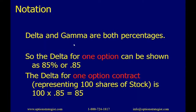Here's the notation. Delta and gamma are both percentages. The delta for one option could be shown as 85% or 0.85. Most of the time we'll be talking about the delta for an option contract, and since an option contract represents 100 shares of stock, we multiply by 100 — which has the effect of moving the decimal point two places to the right.